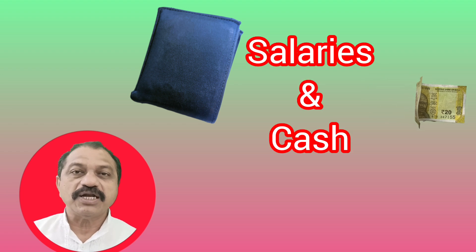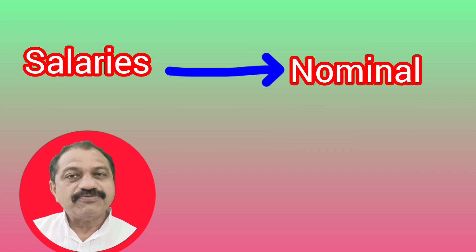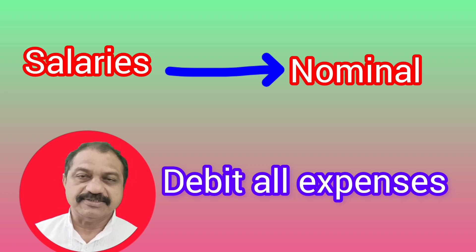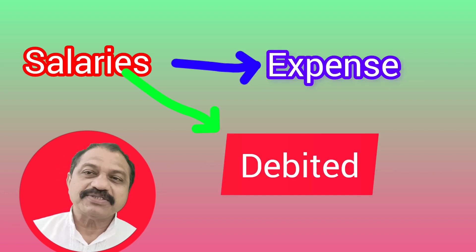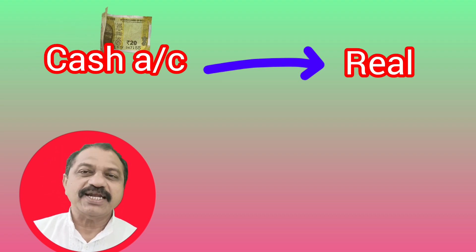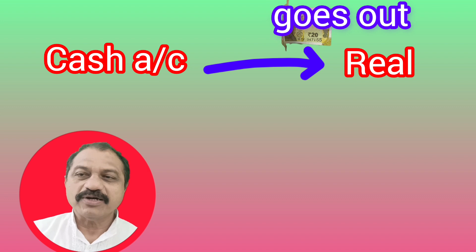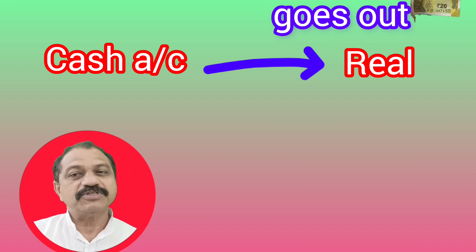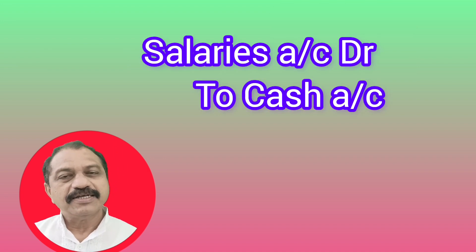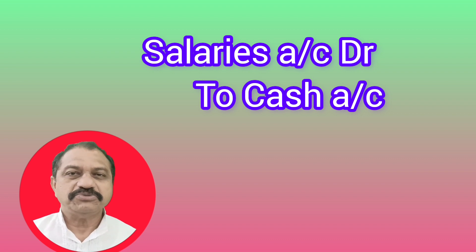For example, salary paid by the business. The two affected accounts are salaries account and cash account. Salary is a nominal account, so the rule of nominal accounts applies: debit all expenses or losses and credit all incomes or gains. Here salary is an expense, therefore salary account is debited. Cash account is a real account — cash goes out of the business, therefore cash account is credited. The journal entry is: Salaries Account Dr. To Cash Account.